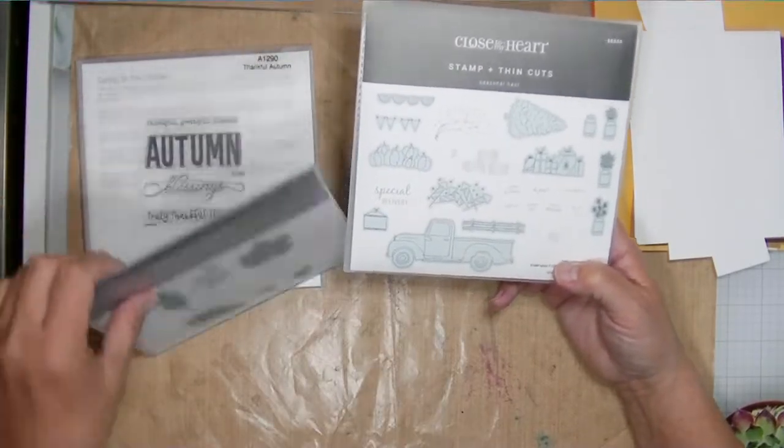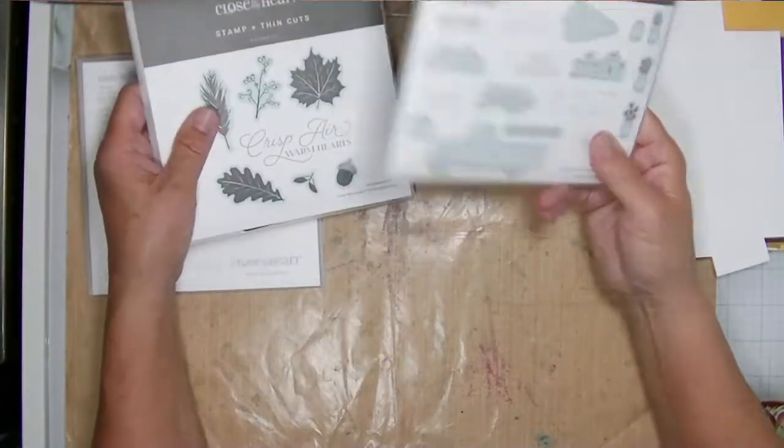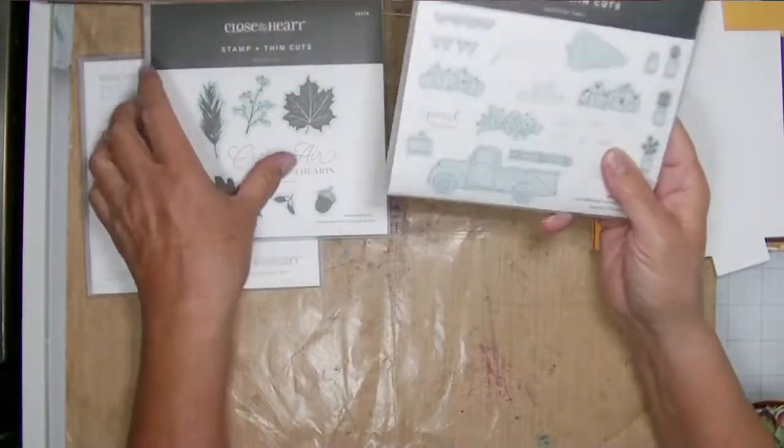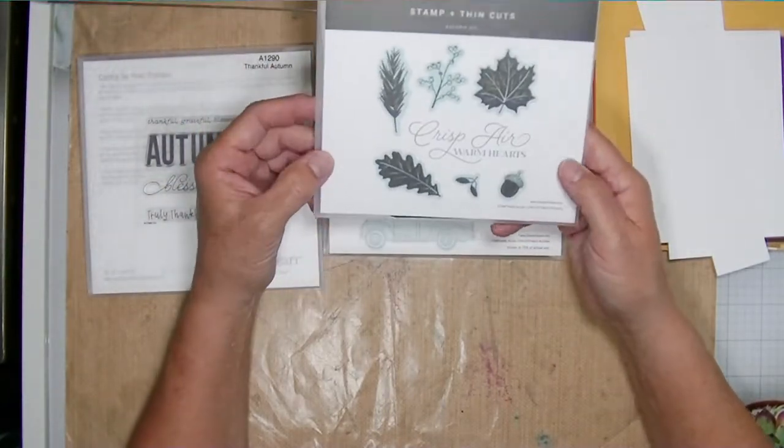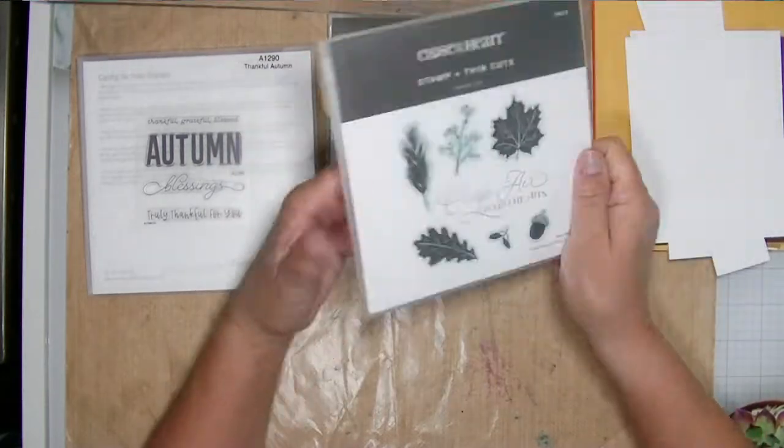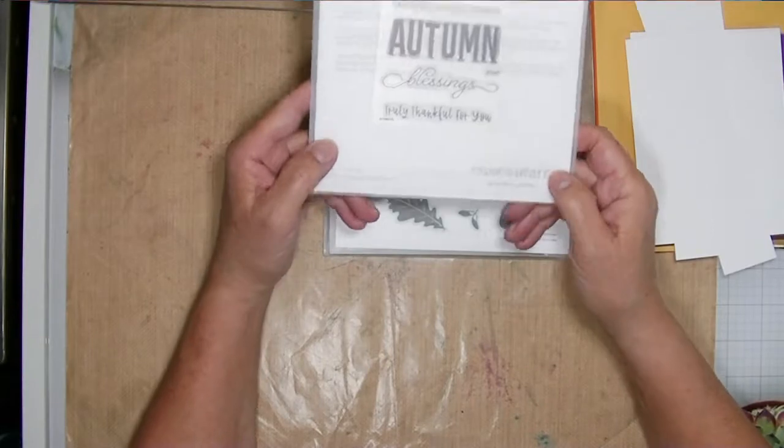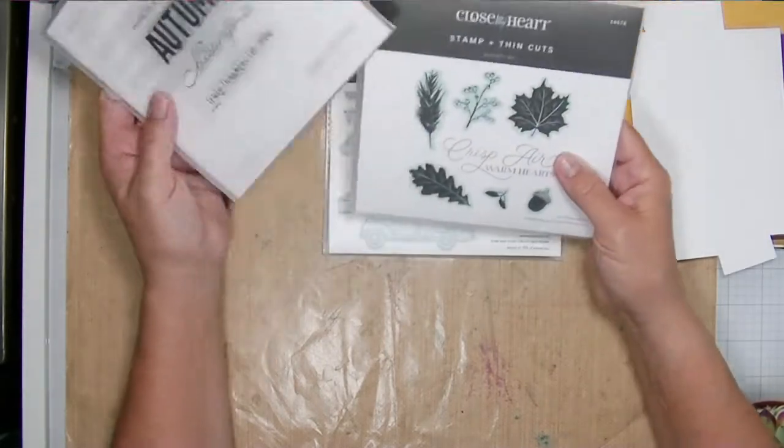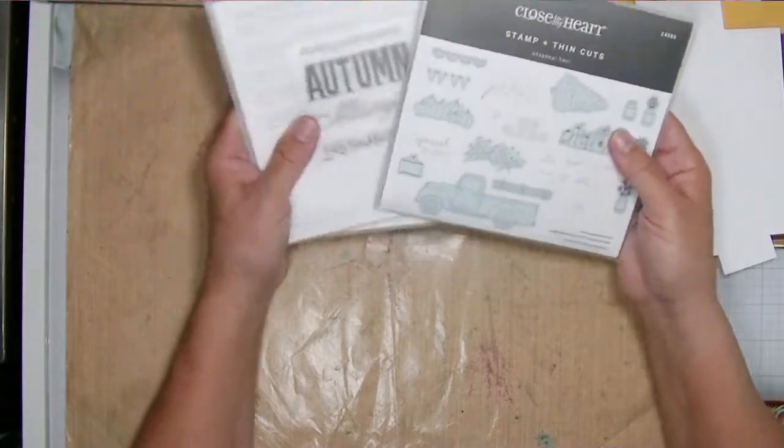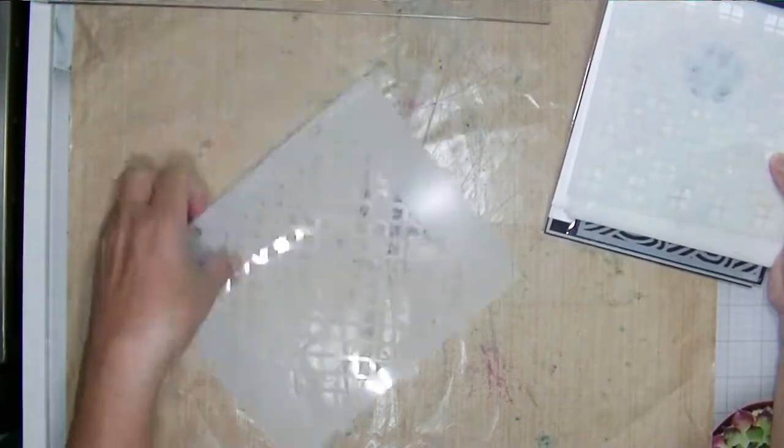So I pulled out some stamps I just got today. They were literally delivered this morning. I couldn't resist playing with them. This is the seasonal haul stamp and die set from Close to My Heart. I also got the autumn air stamp and die set and this really pretty sentiment set called Thankful Autumn. I actually bought these to create some embellishments for scrapbooks, but I'm going to use them to make a card today.